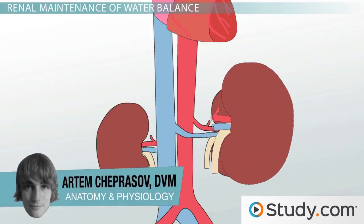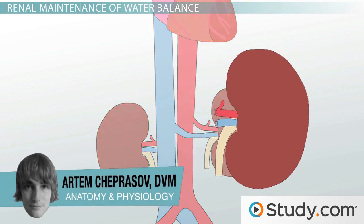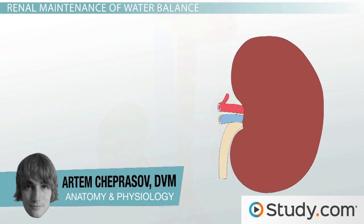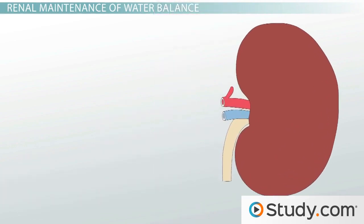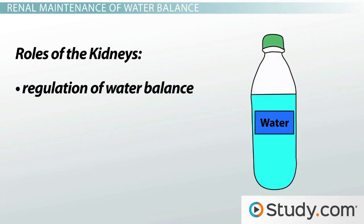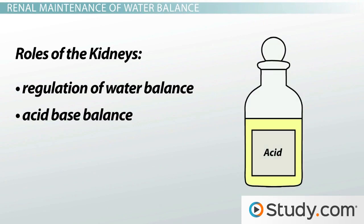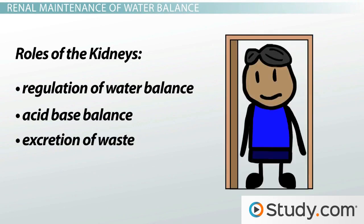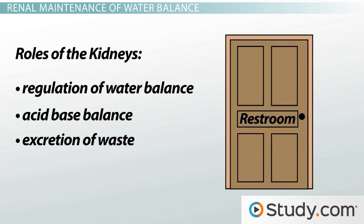Your kidneys have three main purposes that influence the rest of your body. These three roles include the regulation of water balance, acid-base balance, and the excretion of waste.